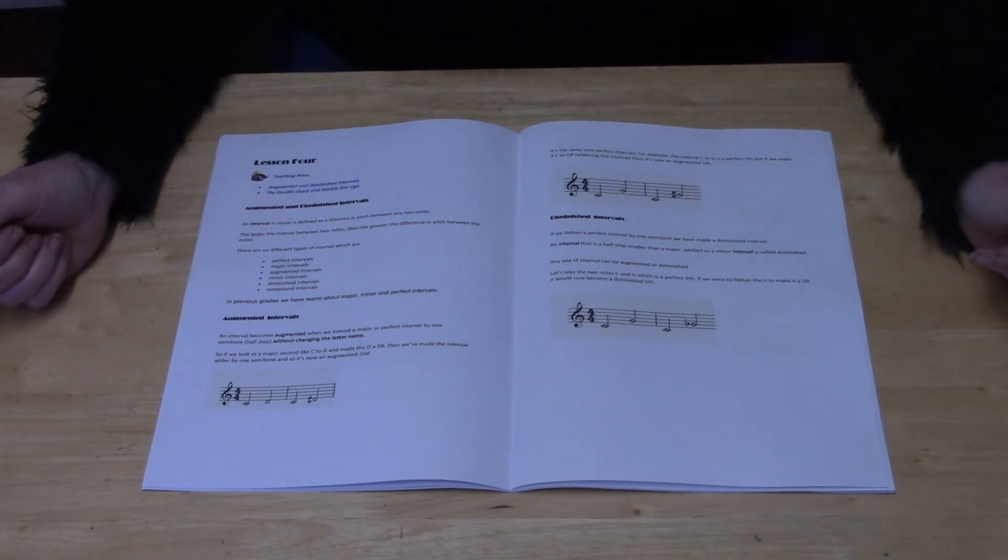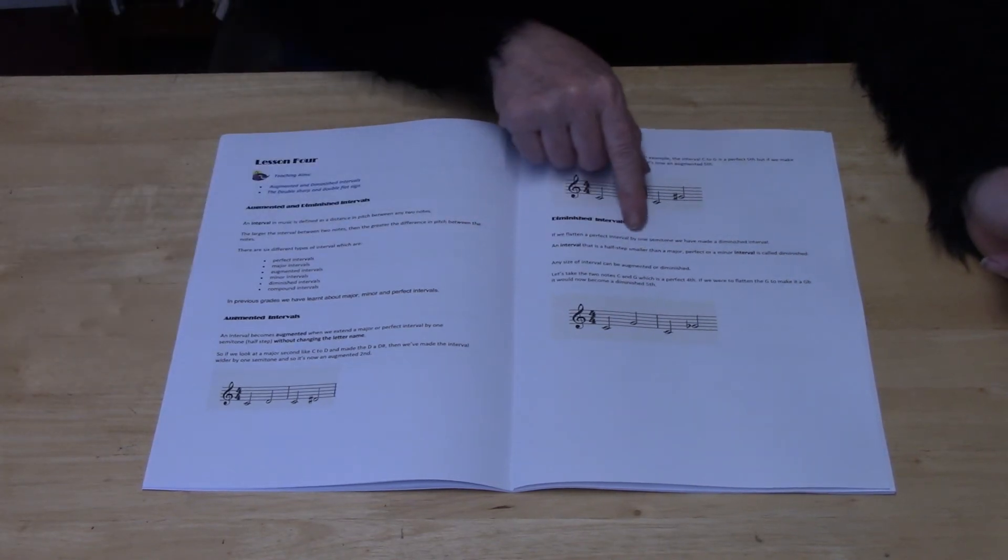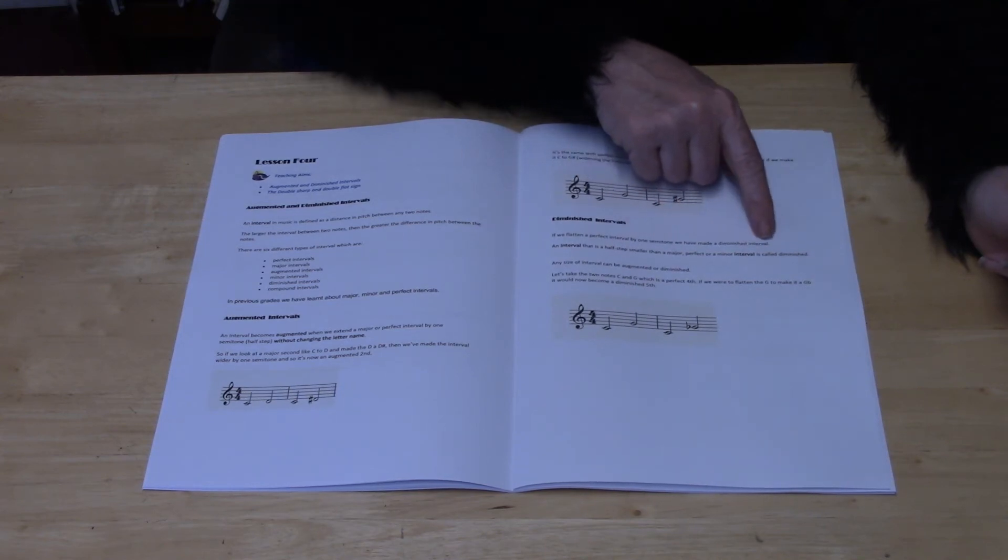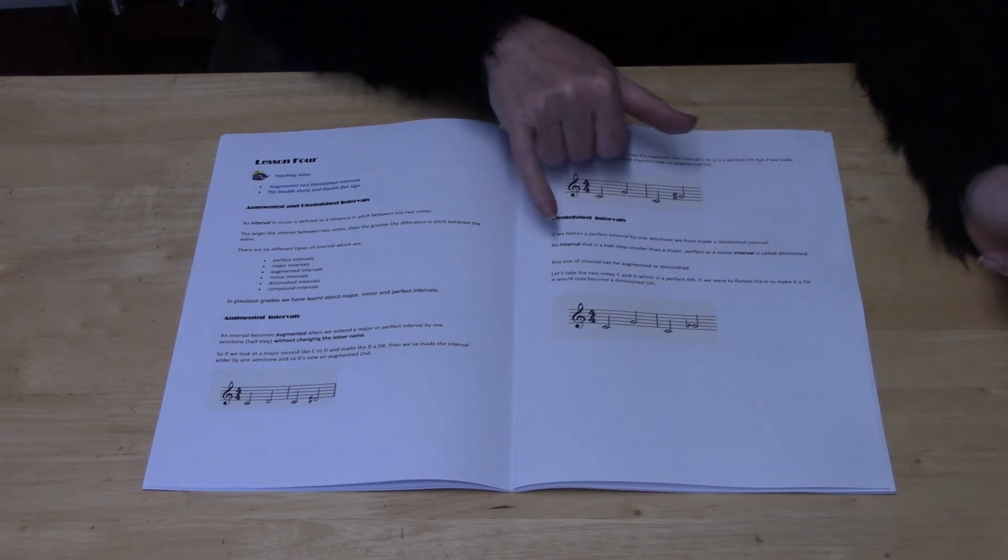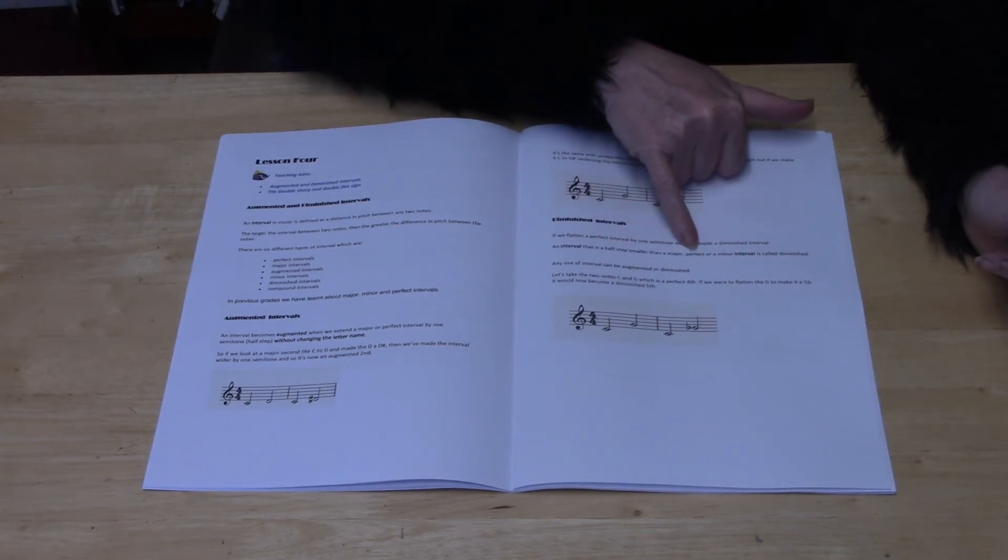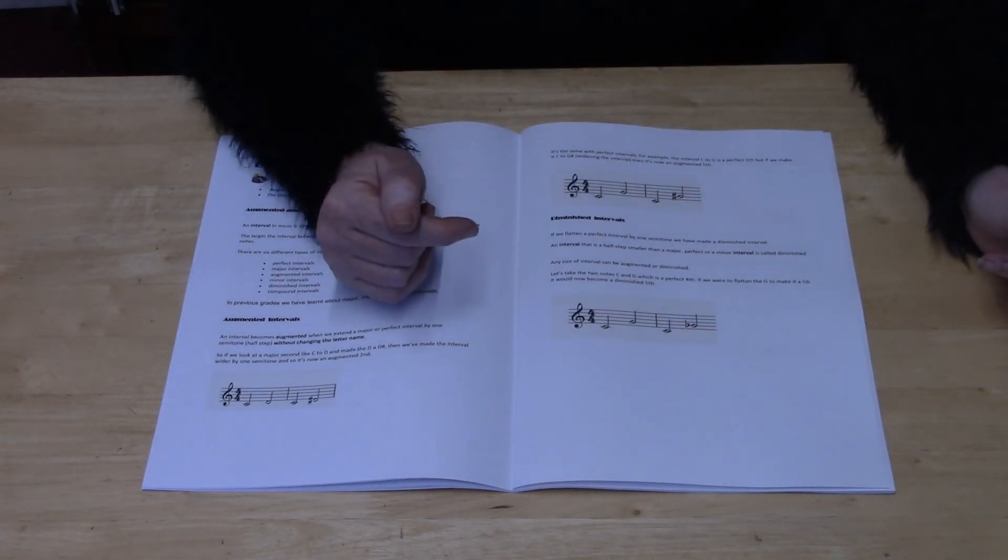The opposite of the augmented intervals is the diminished intervals. If we flatten a perfect interval by one semitone, we've made a diminished interval. An interval that is half a step smaller than a major or perfect or a minor interval is called a diminished interval.